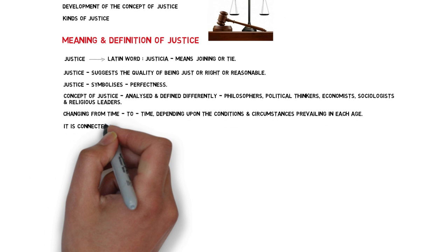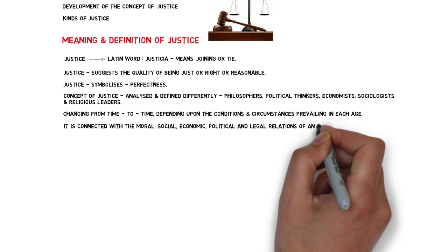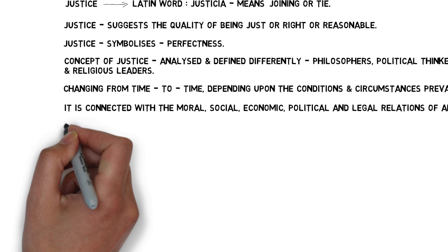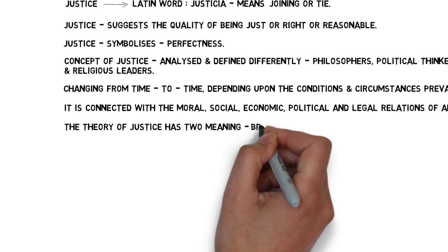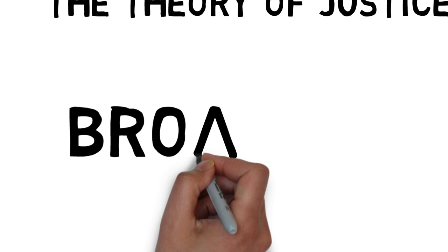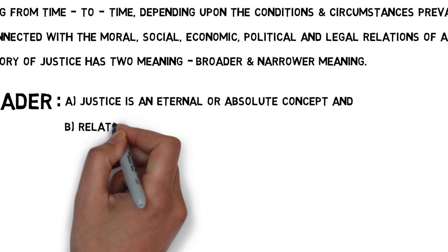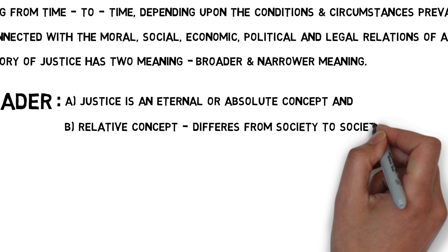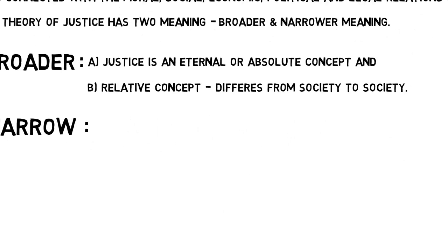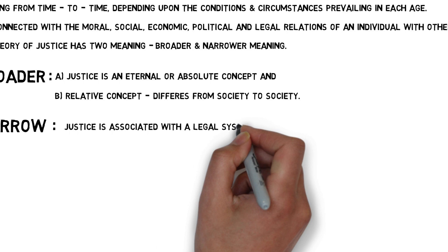Justice is also connected with the moral, social, economic, political, and legal relations of an individual with others. To conclude, the theory of justice has two meanings: a broader and a narrower meaning. In the broader sense, justice is an eternal or absolute concept and also a relative concept which differs from society to society. Under the narrow meaning, justice is associated with the legal system and legal process in a society.